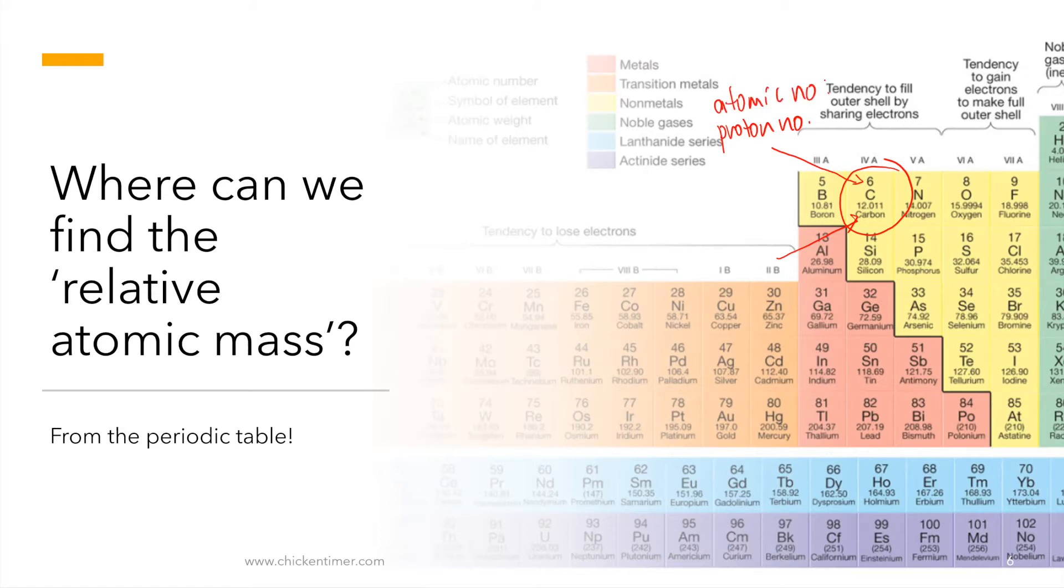So earlier on, we call this proton number, then we also call this atomic number. Nuclear number. It's a nuclear number. Or the atomic mass. This atomic mass, and then there's another number, there's a mass number. Some teachers call it that way, some books call it that way. So it's nuclear number, atomic mass or mass number.